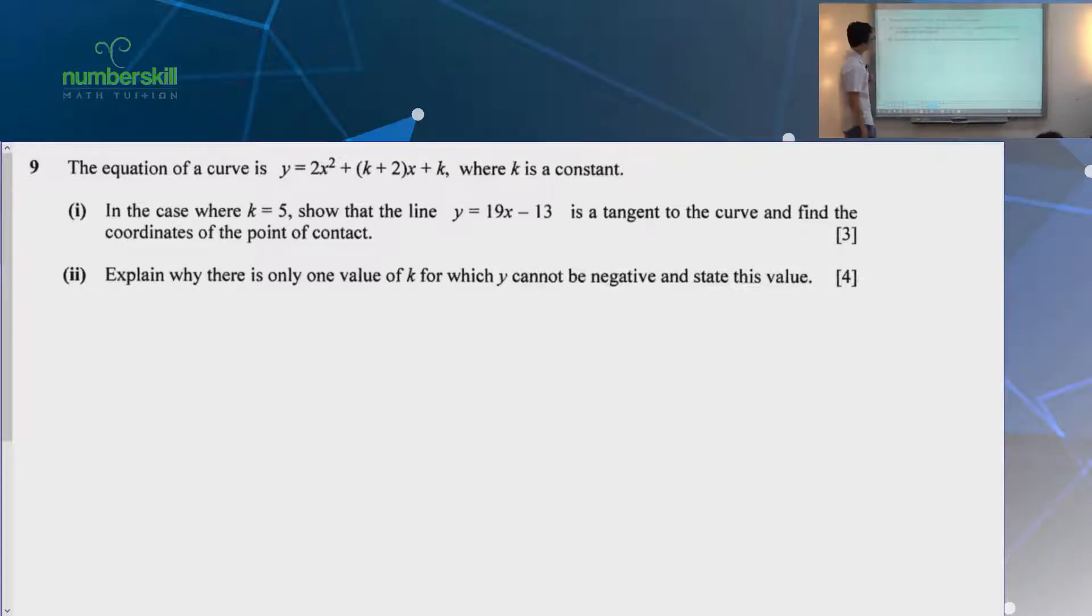The equation of a curve is this, where k is a constant. In the case where k is equal to 5, show that this line is a tangent to the curve and find a coordinate of the point of contact. I think many of you got these three marks. So part one should be quite easily done, right?